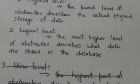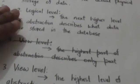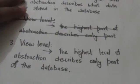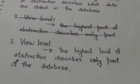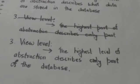View level is the highest level of abstraction which describes only part of the entire database. Because many users of the database system need to access only a part of the database, the view level of abstraction simplifies their interaction with the system.